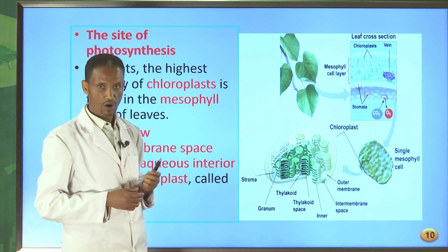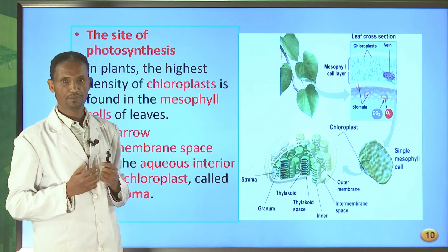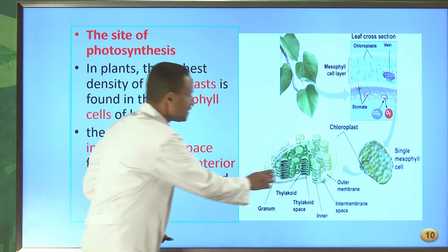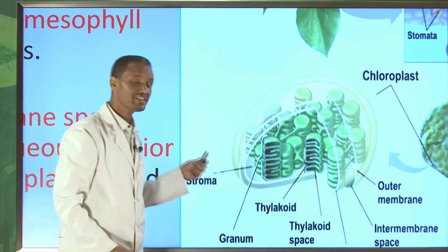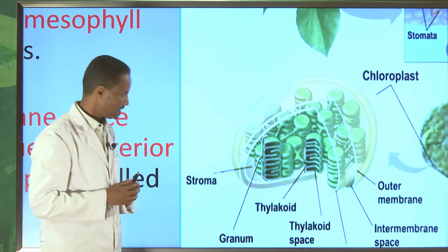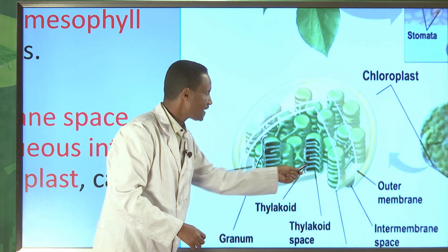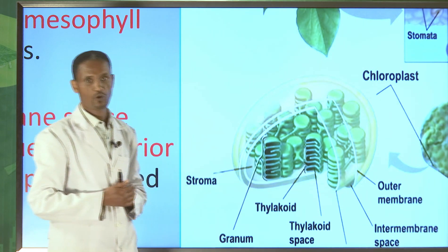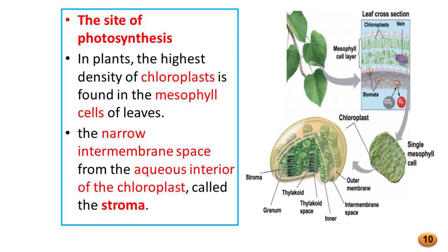Inside the inner membrane of the chloroplast there is a space filled with fluid called the stroma. The stroma is the site where the light-independent reaction takes place. Inside the stroma there is a disc-like structure called the thylakoid. The stack of thylakoids can form grana. The grana are the site where light-dependent photosynthesis takes place. The internal part of the thylakoid is called the thylakoid lumen.